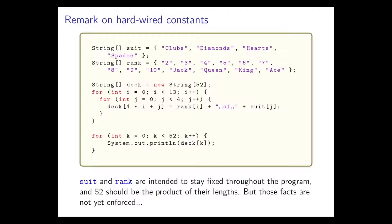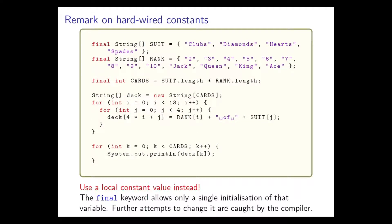Here's something to notice: we used two arrays, suit and rank, which are intended to stay fixed throughout the program because the available ranks and suits are not going to change. The magic number 52 is supposed to be the product of the lengths of those two arrays, but these facts are not yet enforced in our program. We can enforce it by using local constant values — adding the special keyword final in front of our definitions tells the compiler that there should only be a single initialization of that variable. After suit has been initialized it should never be changed again, and the compiler will complain if there is any attempt to change the values of suit, rank, or cards.